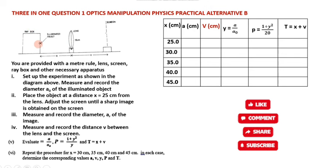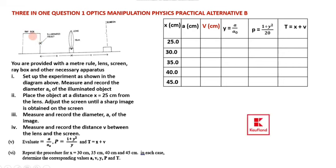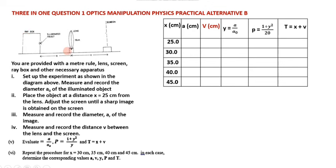So the first one — we have the setup, we have the RayBoss, the illuminated object. The illuminated object is the RayBoss, so that's going to give us the object for the Practical. Then we'll have the lens placed between the RayBoss and the screen. The distance between the RayBoss and the lens is X, and the distance between the screen and the lens is V. You are provided with a meter rule, lens, screen, RayBoss, and other necessary apparatus. Set up the experiment as shown in the diagram above.